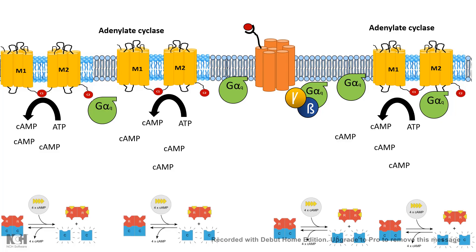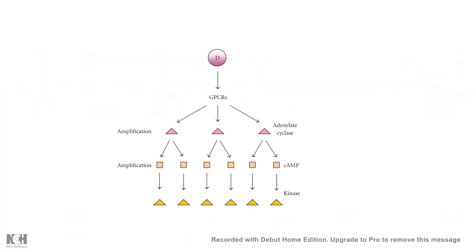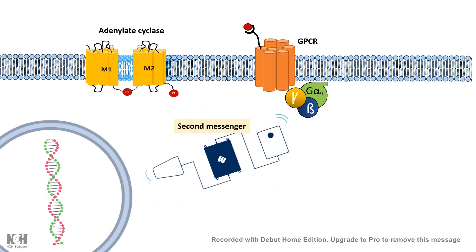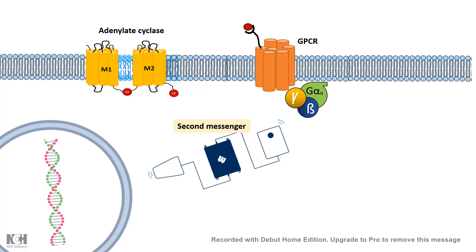When several rounds of cyclic AMP production occur, several protein kinase A molecules can be activated, and the catalytic subunit can go to the nucleus. At several levels the signal gets amplified — signal amplification is a very important aspect of second messengers. Second messengers also give more flexibility and regulability to the signaling system, working like a transistor or amplifier.